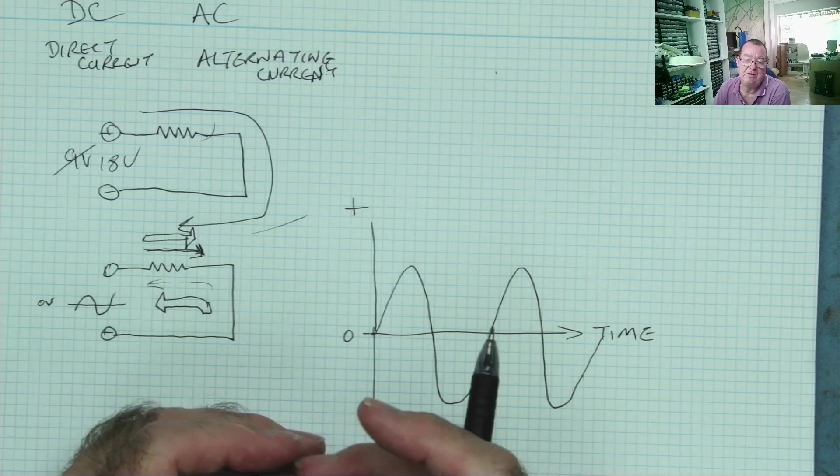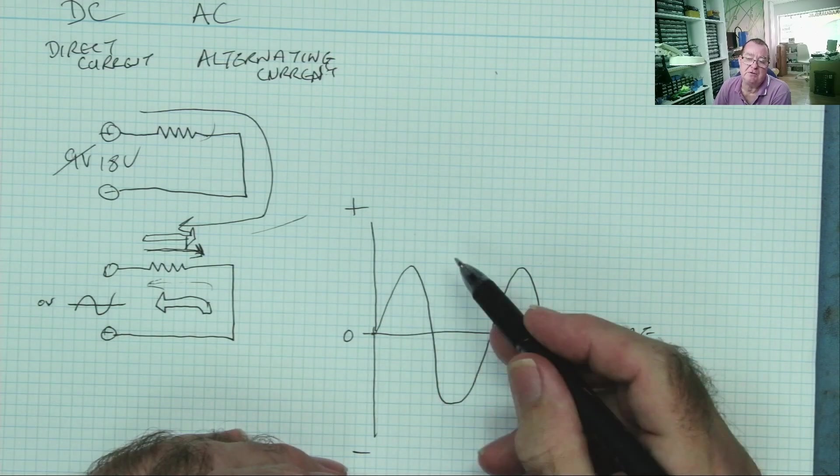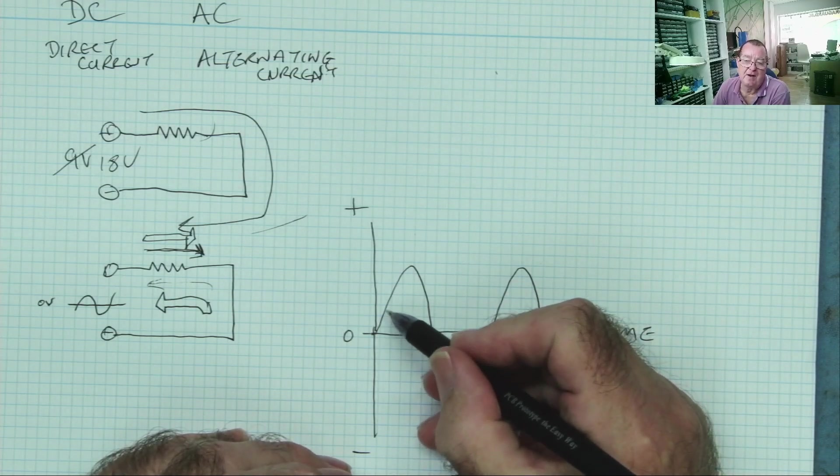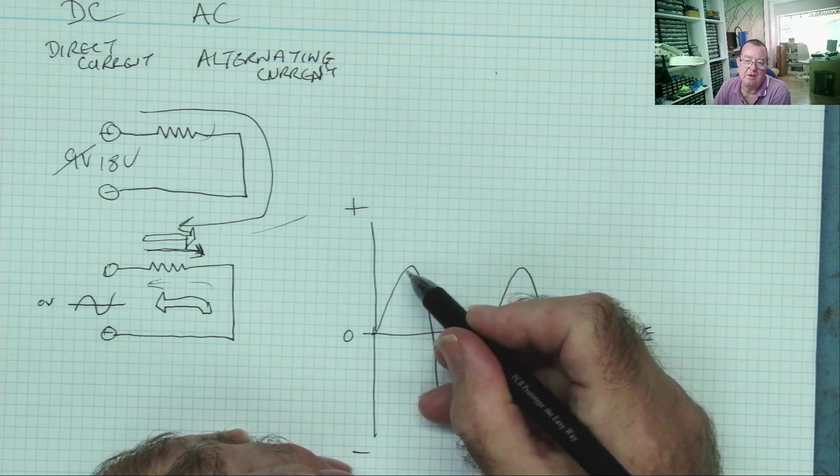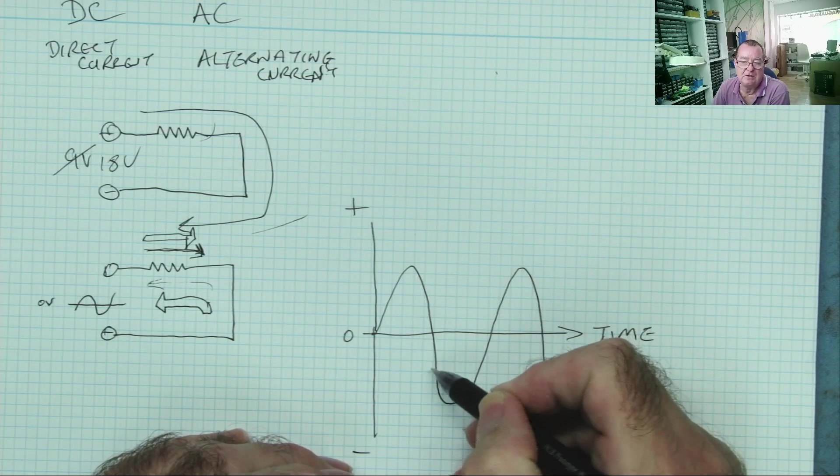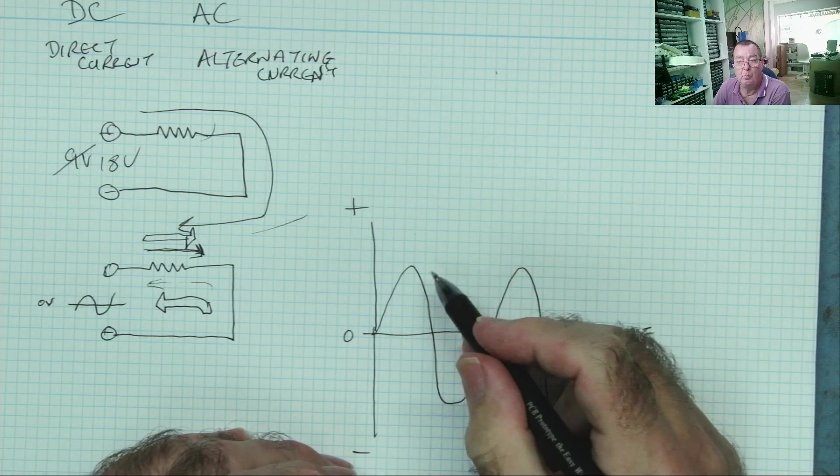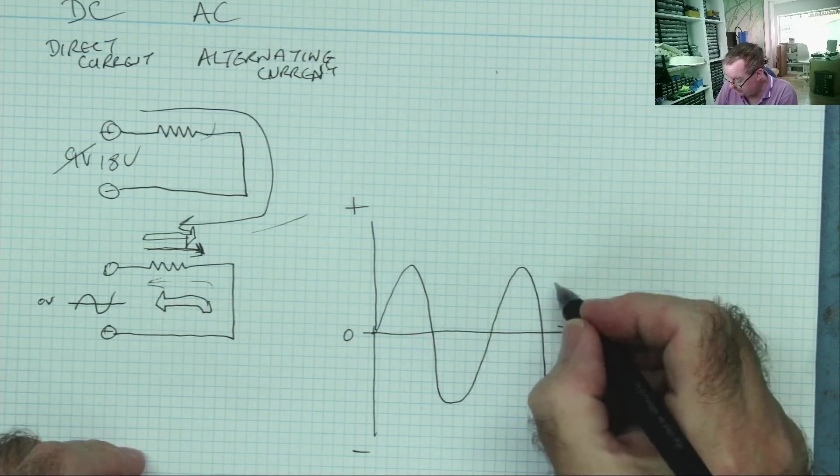And you can see quite clearly that the voltage is increasing and decreasing. And it's doing it in a certain way. So at first, it increases fast. Then it increases slower. Then it increases fast. Then it increases slower. And so on. This waveform is called a waveform. It's called a sine wave.